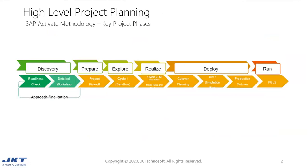The key project phases based on SAP Activate methodology are: discovery, prepare, explore, realize, deploy, and run. Moving along, we do the readiness check, then a detail workshop for approach finalization. In prepare, we do the project kickoff. With explore, we are ready with cycle one — migration of the sandbox system in the landscape. In realize, we do migration of subsequent systems in the landscape. Finally in deploy, we start with cut-over planning, then go-live and post-go-live support in run.